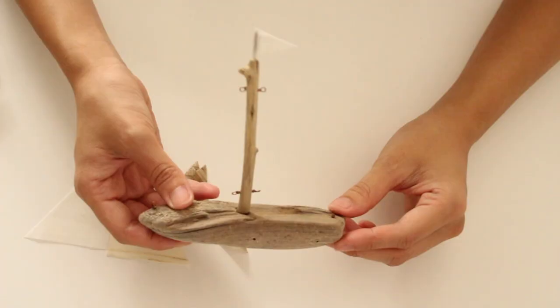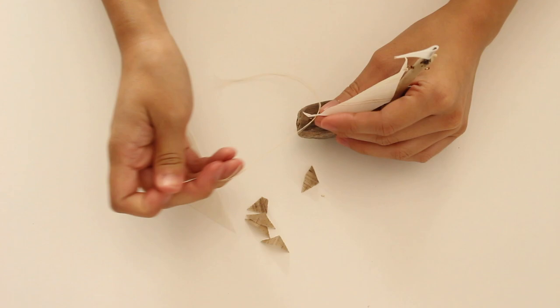Puncture holes near the corners of the sails, add twine, and attach them to the loops with a double knot.